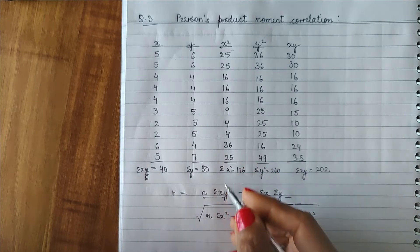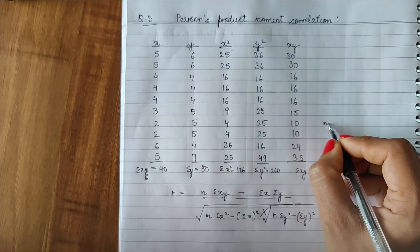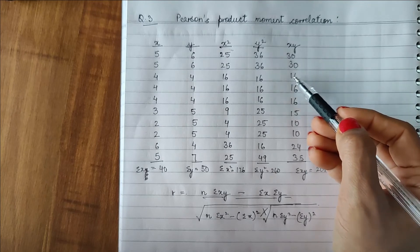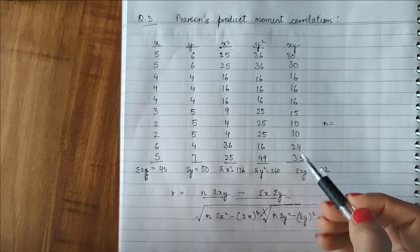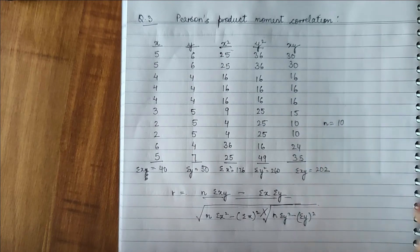Now we are going to put these values for n. Our n is 2, 3, 4, 5, 6, 7, 8, 9, 10. 10 values are there. So it is 10.